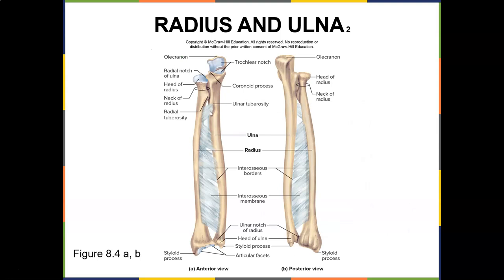Now the radius and the ulna. Remember, the radius is on the thumb side — think 'rad,' like that BMX bike movie. Here's the head of the radius, the neck of the radius, and the radial tuberosity. These features are important because when you study muscles, you'll have to memorize where muscles originate and insert — and they usually insert on these features, such as the radial tuberosity and ulnar tuberosity. Don't skip over this terminology.